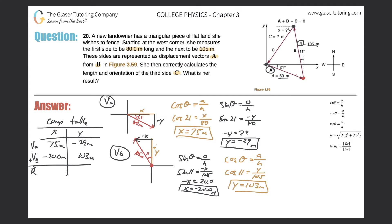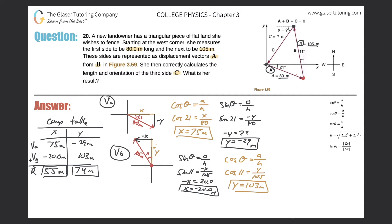To find the components of the resultant vector, all I need to do is add the x's together and add the y's together. So 75 plus negative 20 equals 55 meters for the x component. Then for the y: negative 29 plus 103 gives positive 74 meters. These are the x and y components of the resultant vector. Now I'm going to create a new coordinate system and draw the resultant vector.